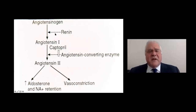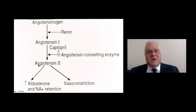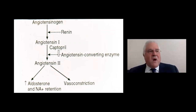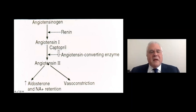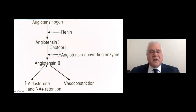With increased renin secretion, renin is an enzyme that cleaves angiotensinogen — manufactured in the liver — producing angiotensin 1, which circulates until it reaches the lung. Angiotensin-converting enzyme in the lung converts it to angiotensin 2 — notably, COVID binding to ACE is supposedly why it predilects the lungs. Captopril, an ACE inhibitor, prevents the conversion of angiotensin 1 to angiotensin 2. Once angiotensin 2 is formed, you get primary vasoconstriction and also increased aldosterone causing sodium retention — two mechanisms by which angiotensin 2 secretion causes hypertension.